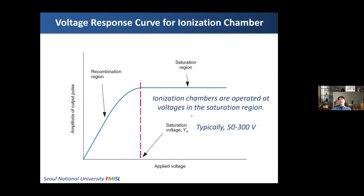Ionization chambers are operated at voltages in the saturation region. The most important property of ionization chambers is that they are quite robust against drift or fluctuation of the applied voltage used in the gas chamber detectors — that is a very good characteristic.